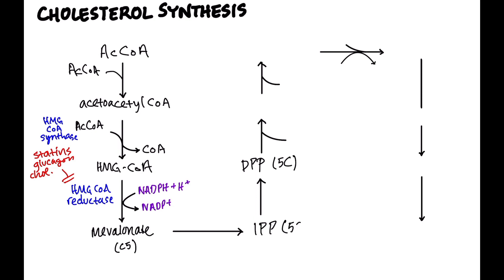And then what happens is we start to get this condensation. So DPP and IPP, which also has five carbons, will get converted to GPP. GPP stands for geranyl pyrophosphate. And of course, this is going to have 10 carbons.